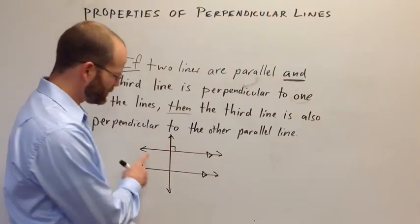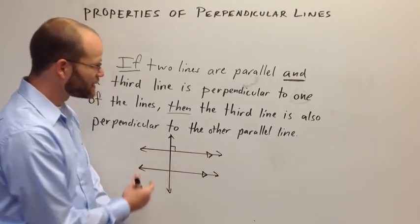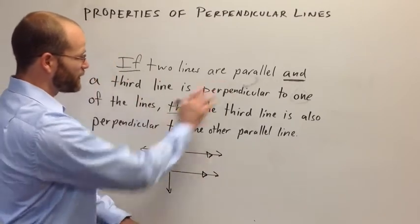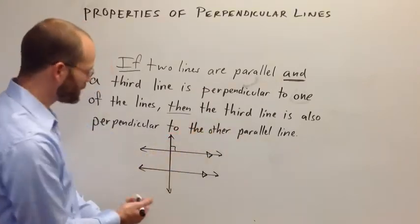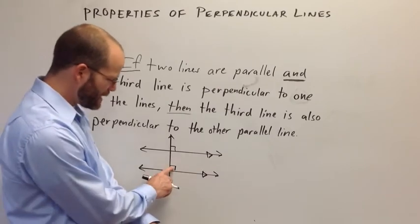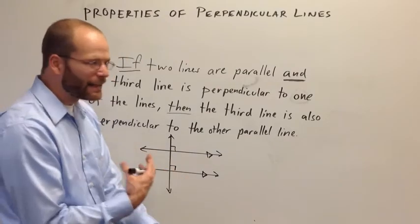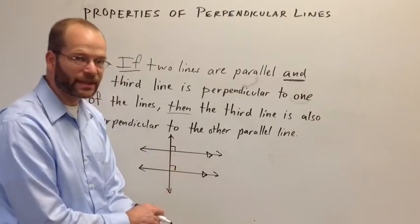There we go. Now I know I have two parallel lines and a third line perpendicular to one of those lines. The hypothesis of this theorem is true. What can I conclude? I can conclude that the third line is also perpendicular to the other parallel line. Notice I drew that in there. I put that in there as my conclusion. But it was not part of the original information given to me in the problem.